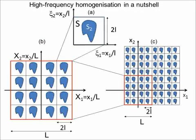High-frequency homogenization separates the original length scale into two: a long-scale capital L and a small-scale l. This yields an equation in the long-scale where the effective properties of the medium are represented by effective electric permittivity and magnetic permeability. These take into account the microstructure of the medium by weighted averages.